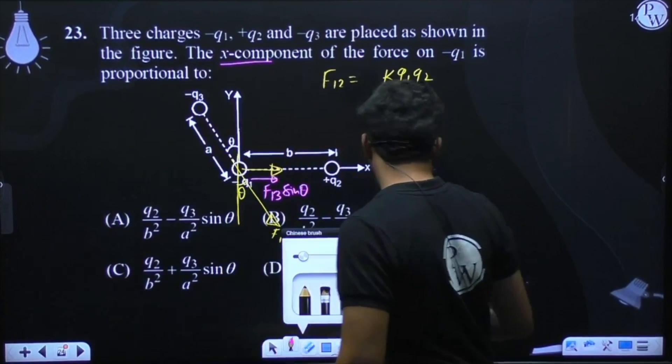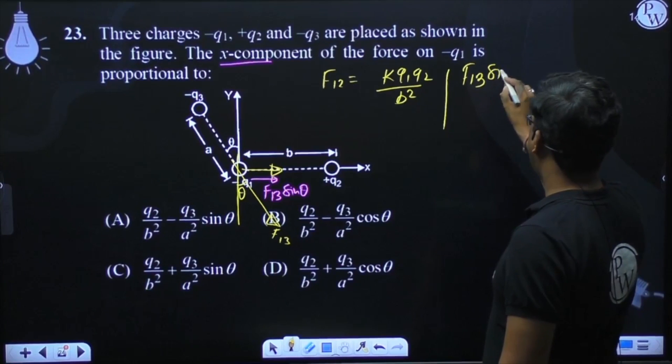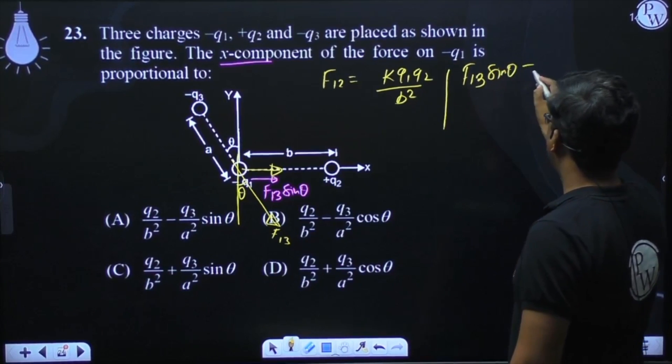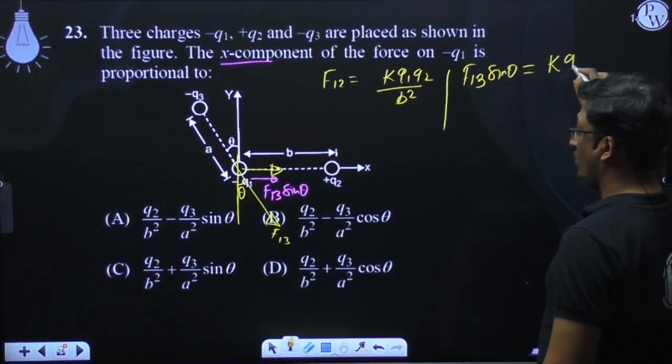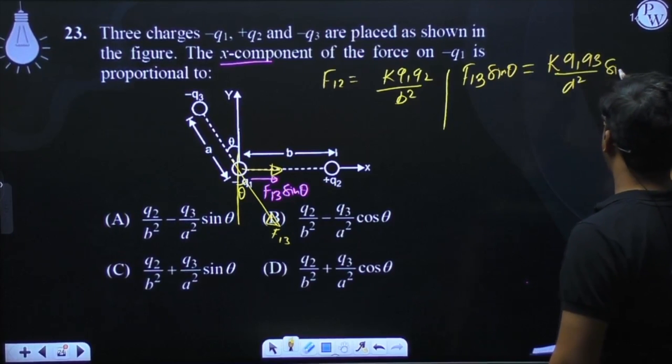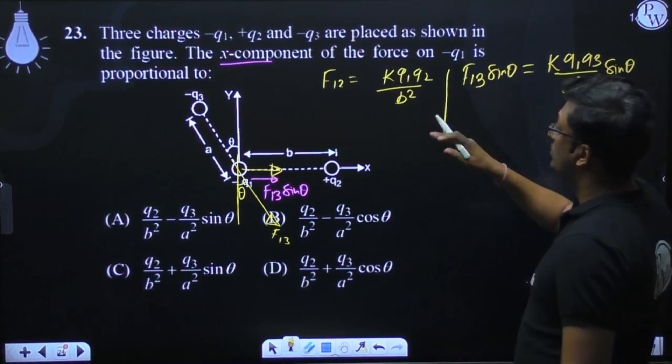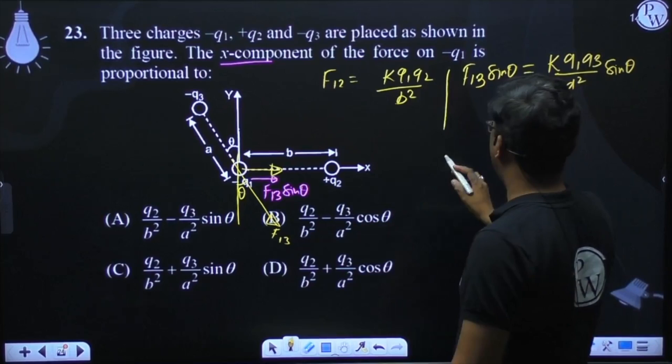If I talk about F1 3 sin theta, basically it will be how much? K q1 q3 by a squared times sin theta. This component is basically proportional to the component. What is common in both cases?